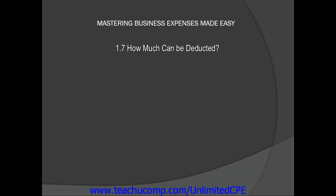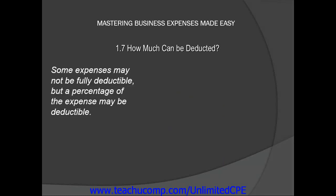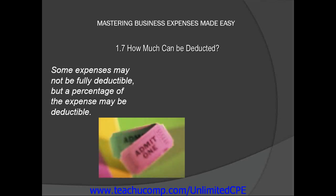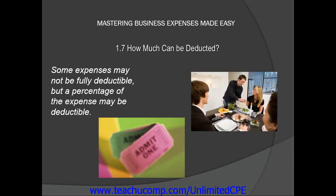Some expenses may not be fully deductible, but a percentage of the expense may be deductible. For example, meals and entertainment that are directly related to the business must be deducted at a 50% limit. Similarly, meals given to employees on business premises are also subject to a 50% reduction limit.